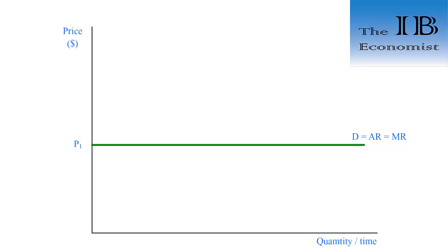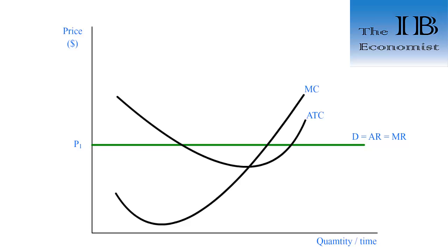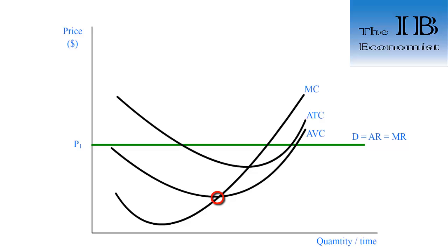Again, if we want to draw the different cost curves we start first by drawing the marginal cost, which initially decreases and then rises due to diminishing returns. Then we add the average total cost, which has its minimum at the point of intersection with the marginal cost. Then if needed we add the average variable cost, ensuring its minimum is also at the intersection with the MC, and that it converges with the ATC at higher levels of output.